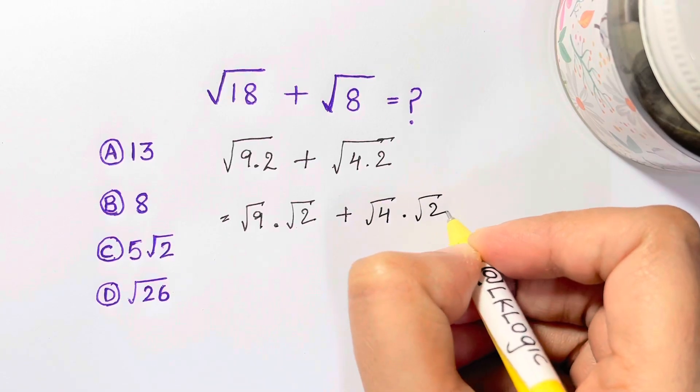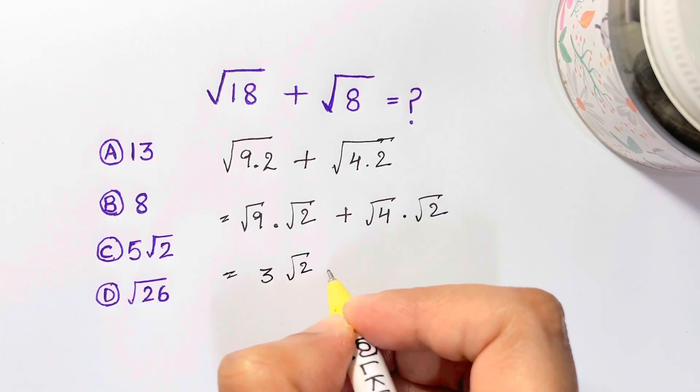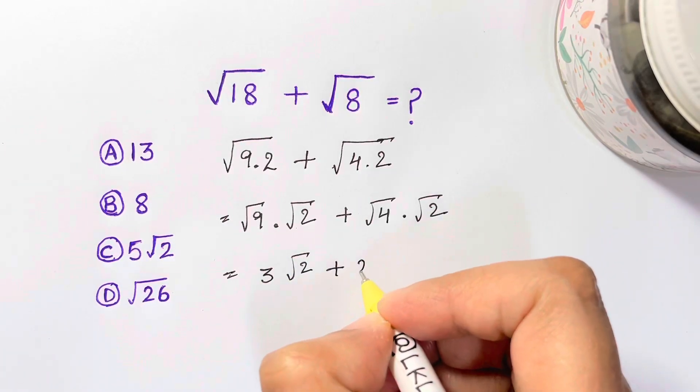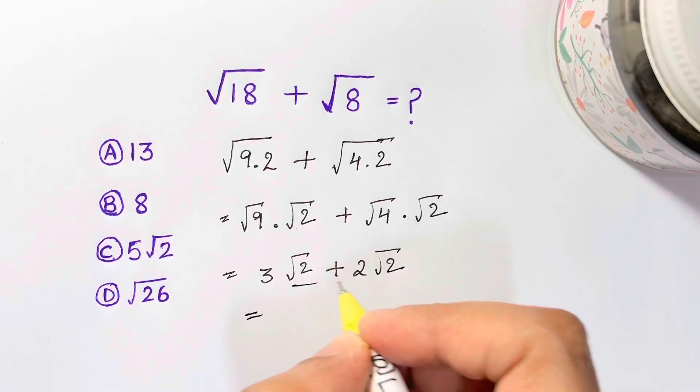Now you can see square root of 9 is 3 and this is square root of 2 plus square root of 4 is 2 and this is square root of 2.